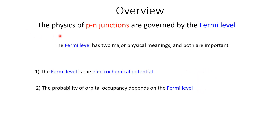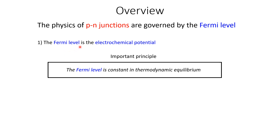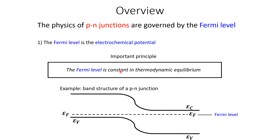The physics underlying this behavior of PN junctions is governed by the Fermi level, a parameter of statistical physics which has two major physical meanings — both of them very important. One meaning is that the Fermi level is the electrochemical potential. The second meaning is that the probability of an orbital to be occupied depends on the Fermi level. There is a very important principle in statistical physics which states that the Fermi level is constant in thermodynamic equilibrium, and we're going to learn why that is true.